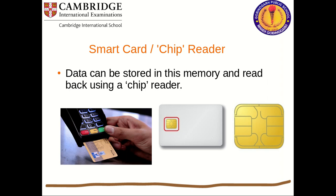Next is the smart card chip reader. Nowadays ATM, debit, and credit cards have both stripe and chip options. Data can be stored in memory and read back using a chip reader. There is also a Wi-Fi chip that can read information from a distance. Sometimes this chip reader doesn't even ask for the PIN.